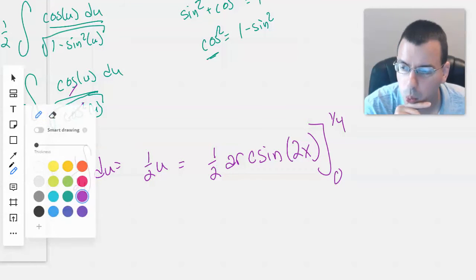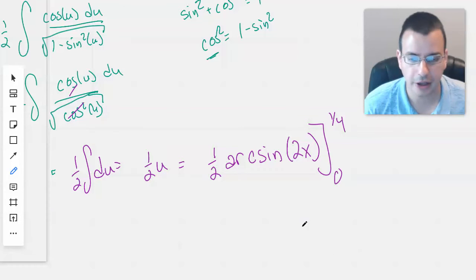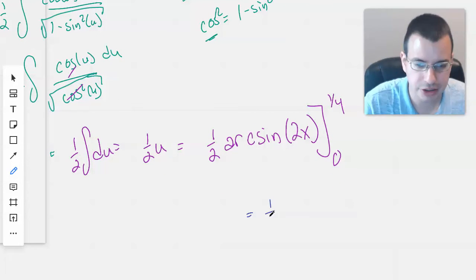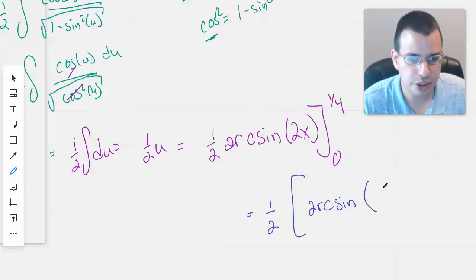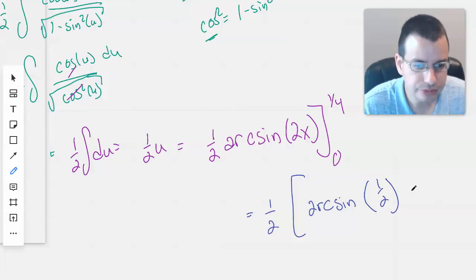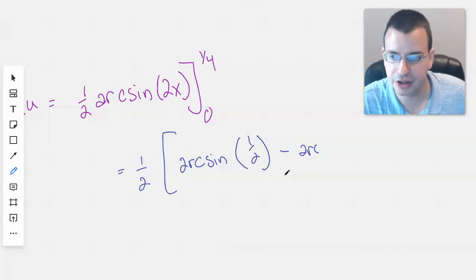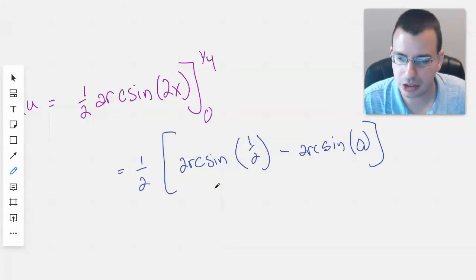And so now, hmm, interesting. Okay, we can do this. I'm going to write it out just to make everything a little bit more obvious. So we'll do the one half here. And then we'll have the arc sine of, let's see, 2 times one fourth is one half, minus arc sine of zero. I'm really terrible at finding out what the arc sine of things are, so I'm going to go through this part a little bit slower.